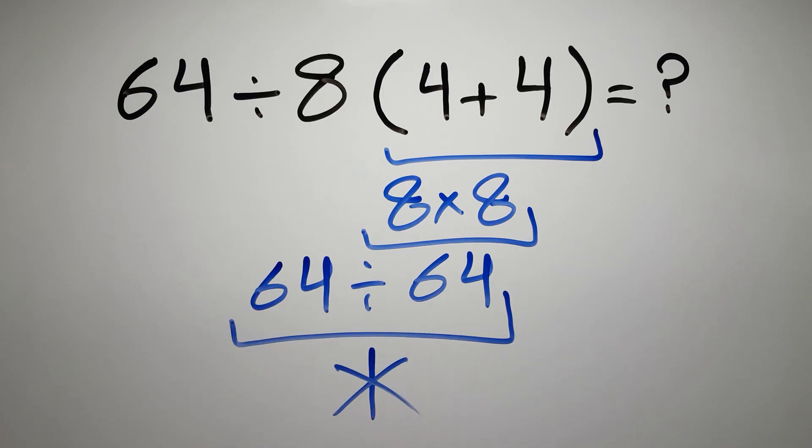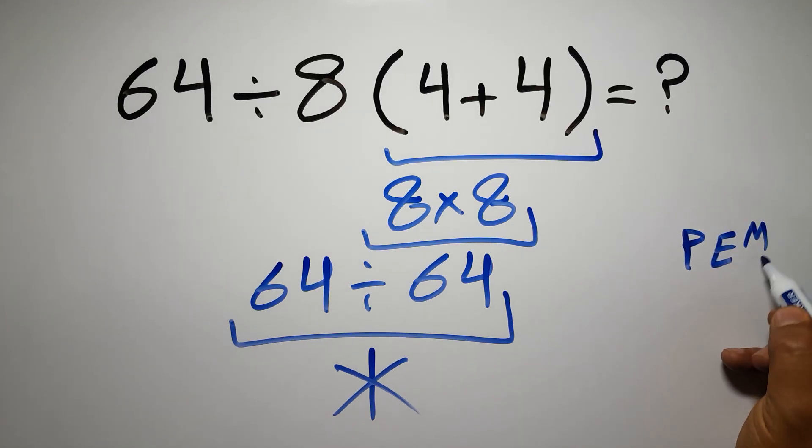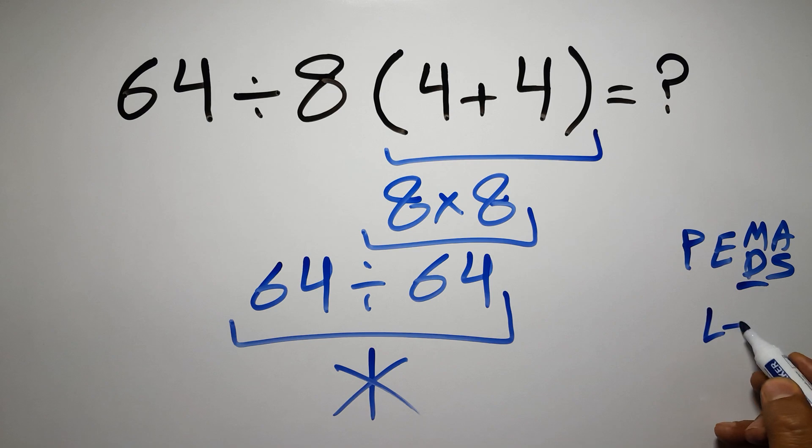Because according to the order of operations, first we have to do parentheses, then exponents, then multiplication or division, and finally addition or subtraction. Remember that multiplication and division have equal priority, and we have to go from left to right, and the same applies to addition and subtraction.